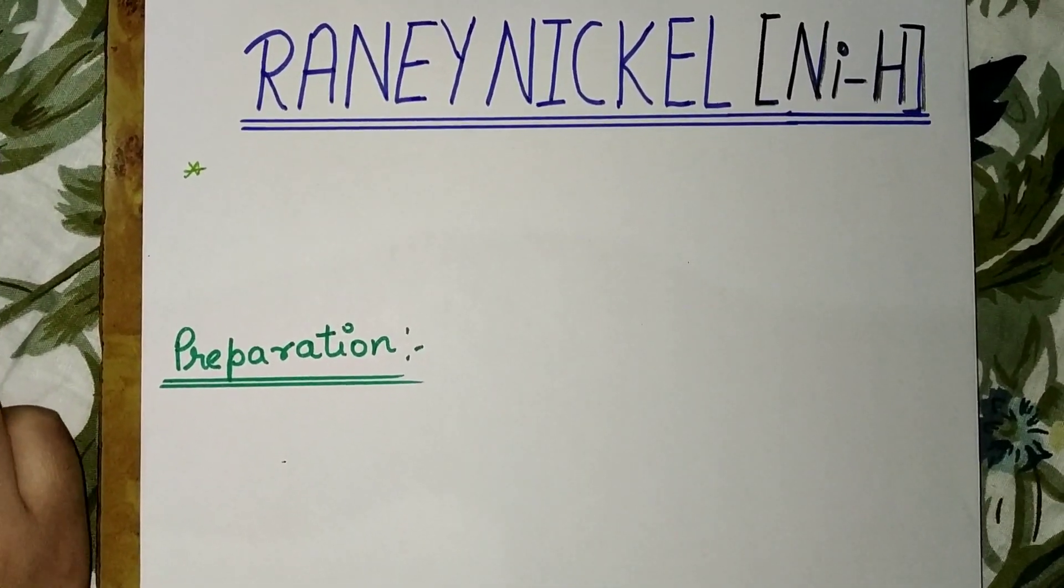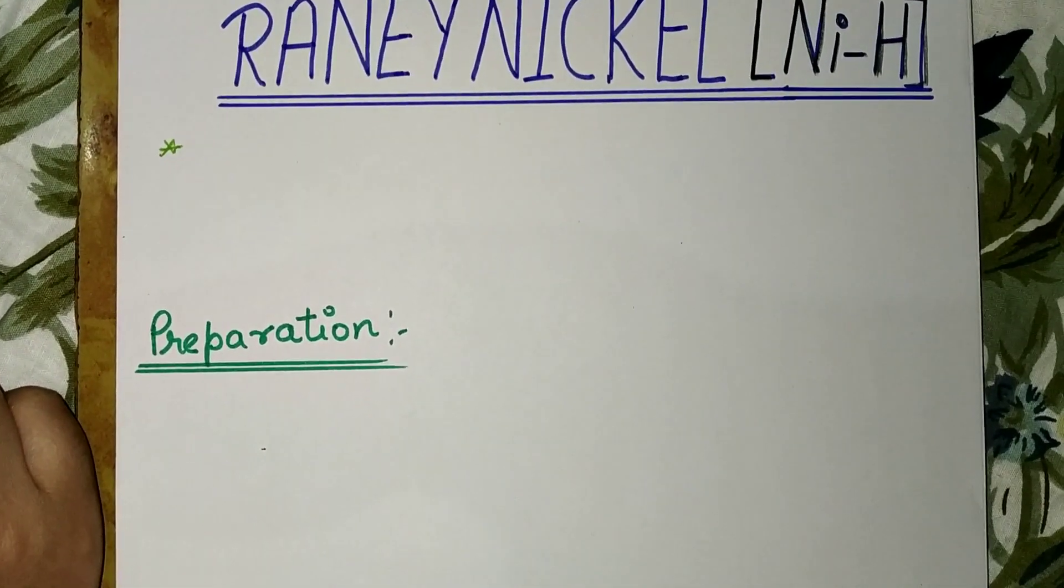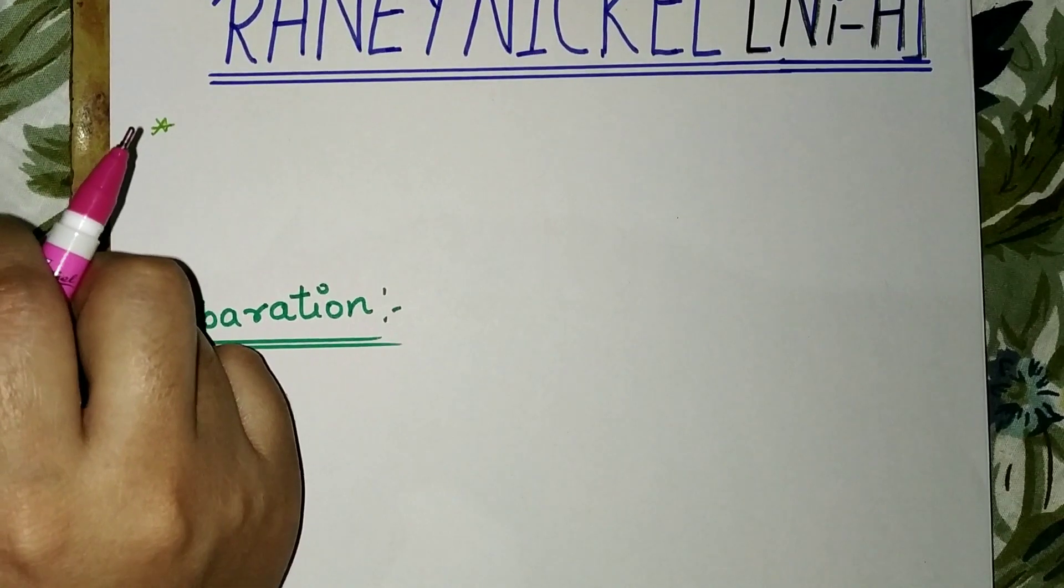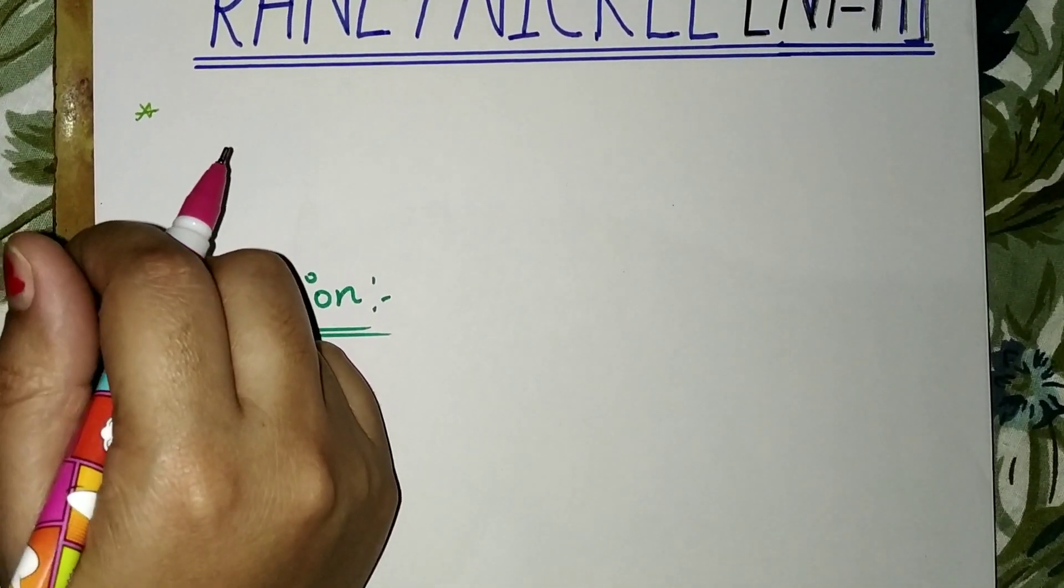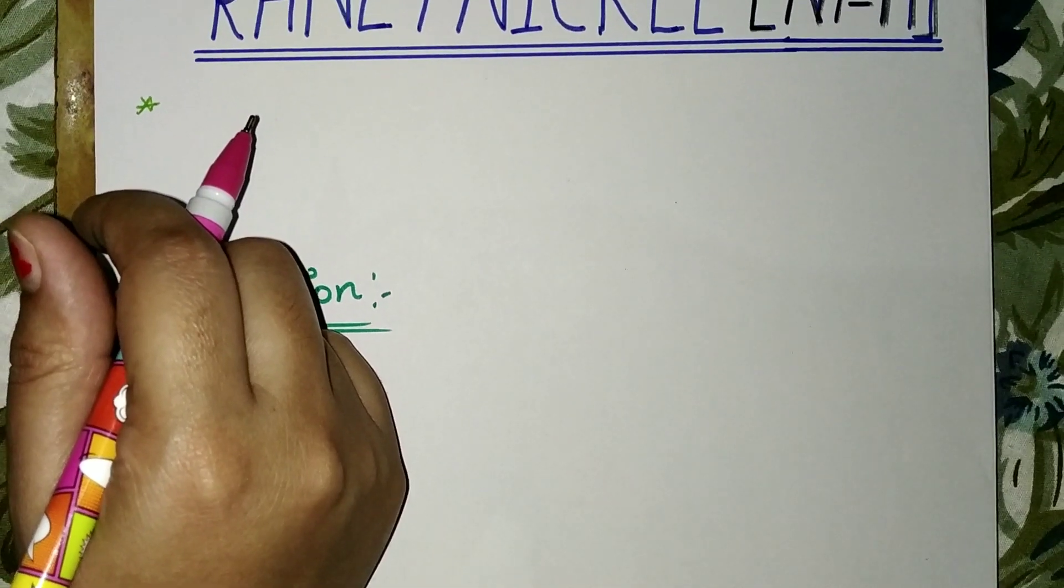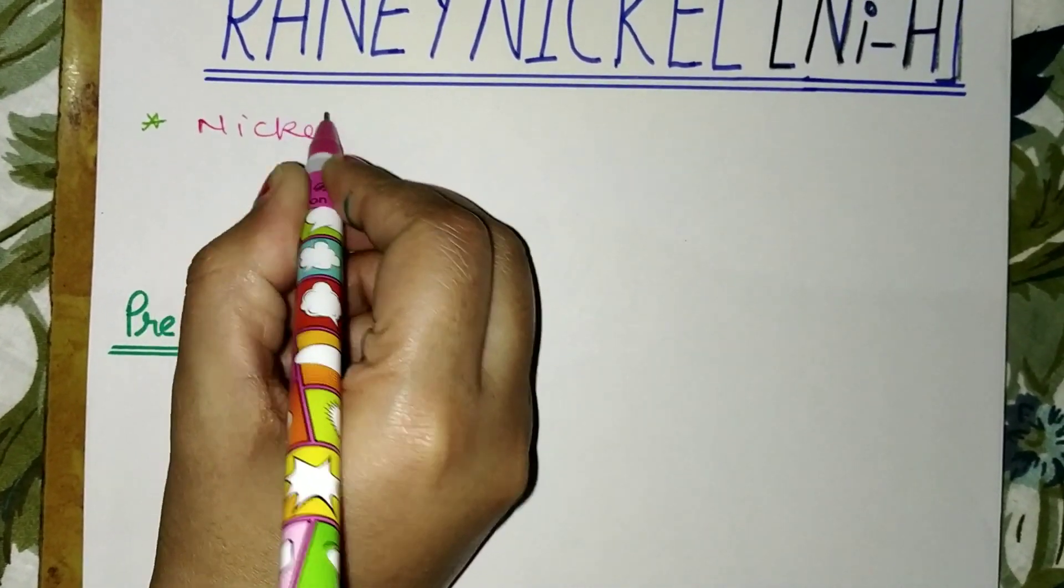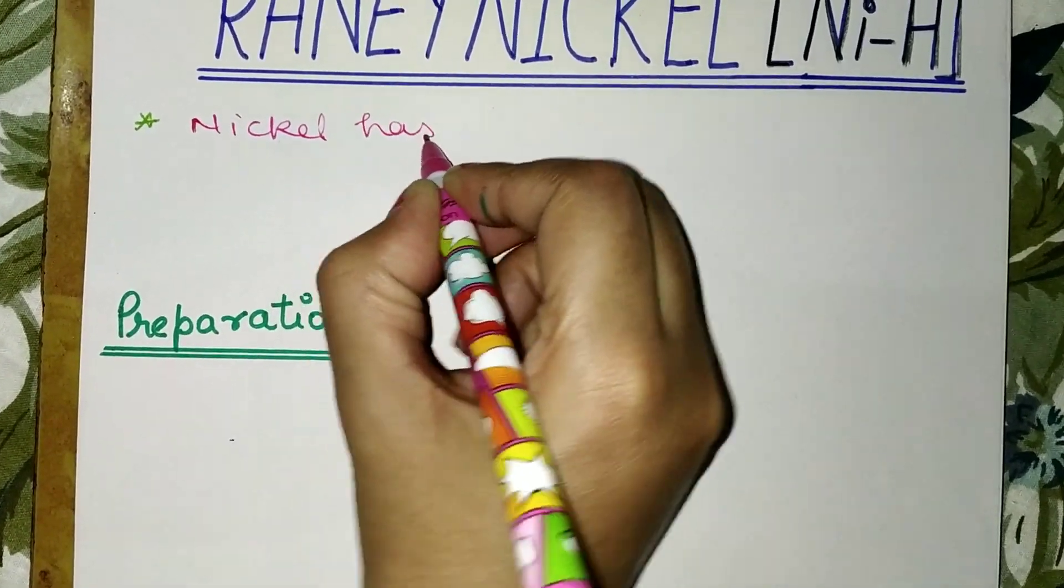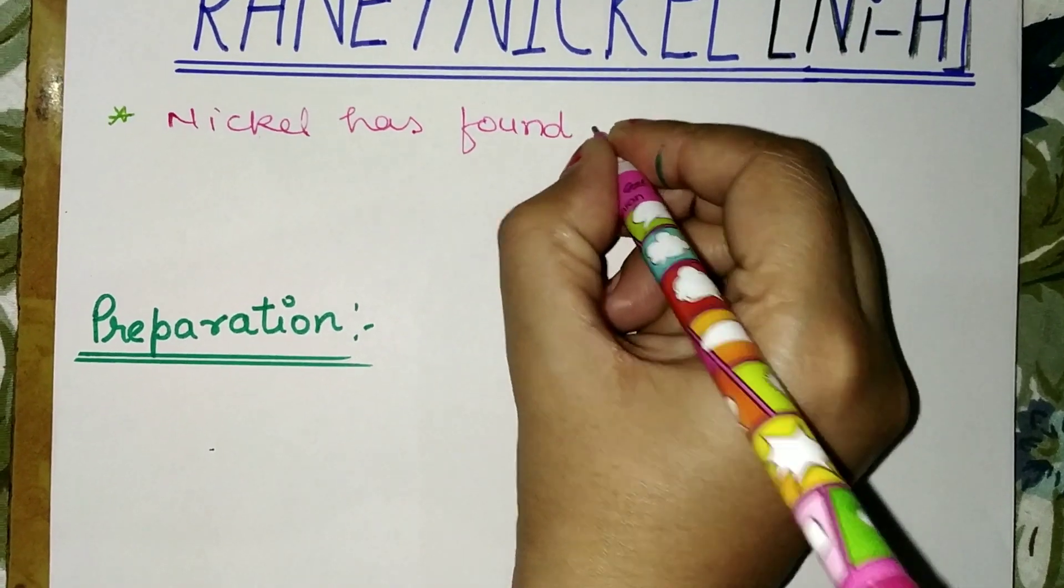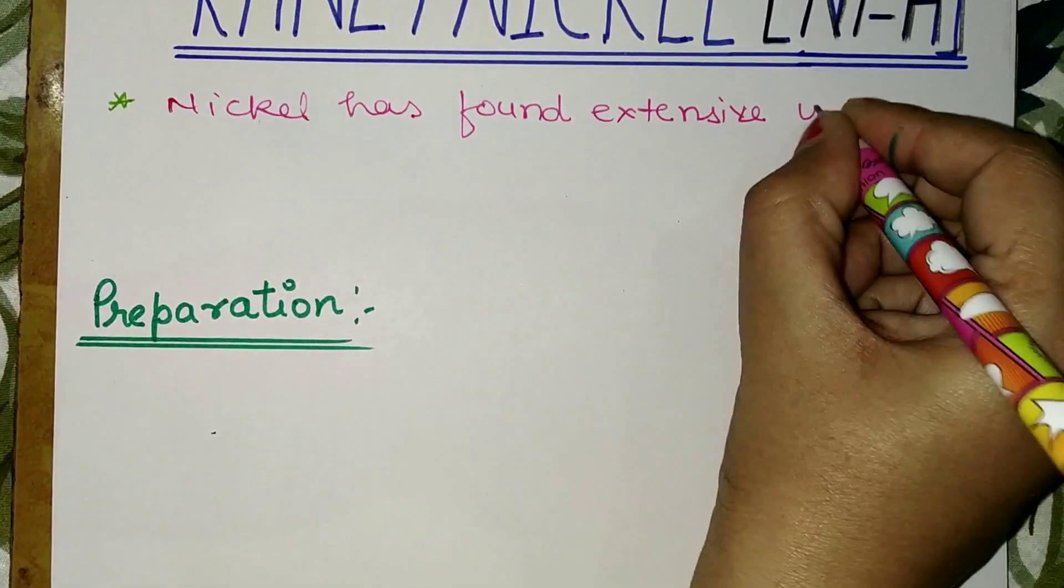Hello everyone, today I am discussing Raney nickel. Raney nickel is a powerful reducing agent used as a catalyst for hydrogenation. Raney nickel is an extremely active form of nickel that has found extensive use as a catalyst for hydrogenation.